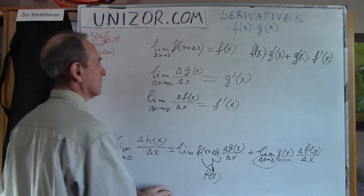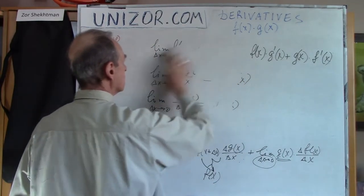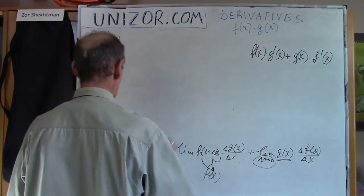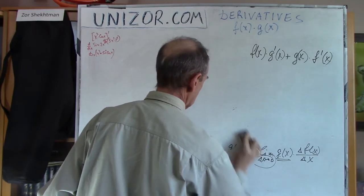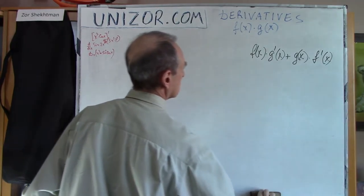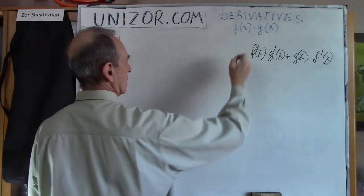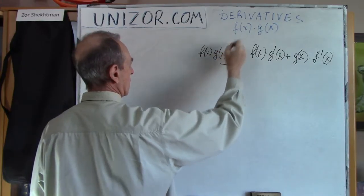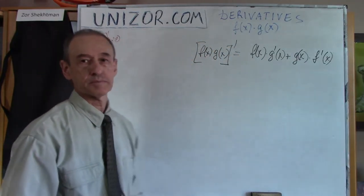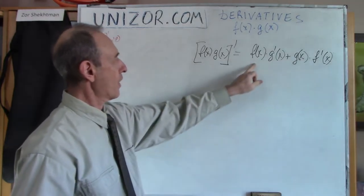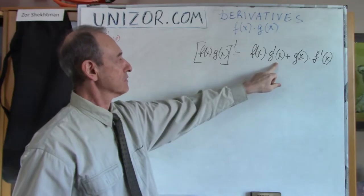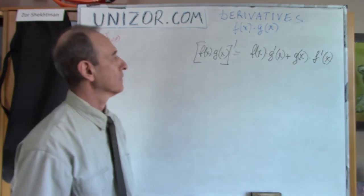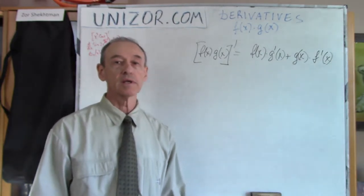This is the final formula. The derivative of a product is not the product of derivatives; however, it can be expressed in a nice symmetrical form: the first function times the derivative of the second, plus the second function times the derivative of the first. It's a bit more complicated than with linear combinations, and this formula must be remembered.